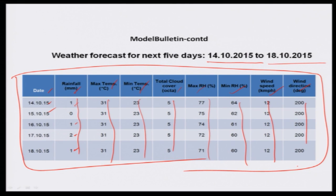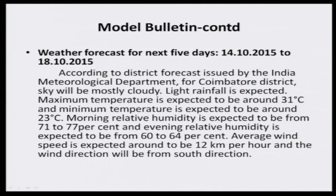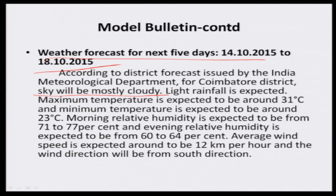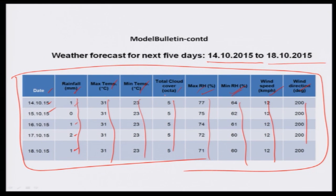So for preparing the weather forecast, you must consider what parameters to focus on — that decision is yours. If you look here, the variability exists in maximum and minimum relative humidity. Let us see what message is prepared from this weather forecast. According to the district forecast issued by the India Meteorological Department for Coimbatore district, the sky will be mostly cloudy, or overcast — with cloud cover around 5 oktas, close to the maximum of 8.